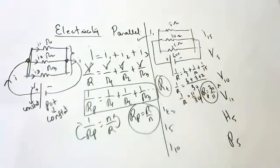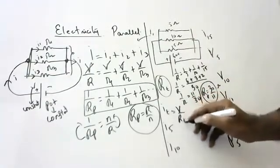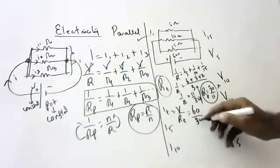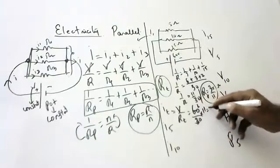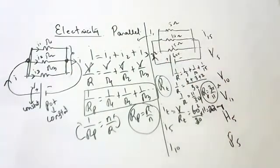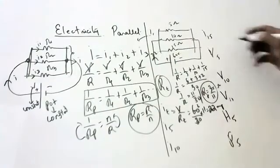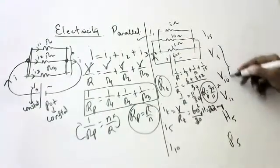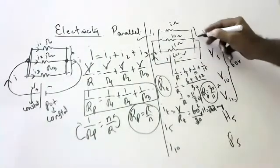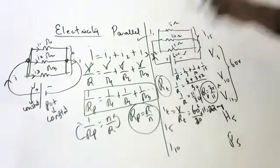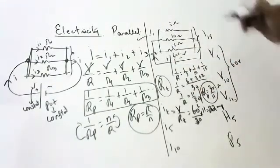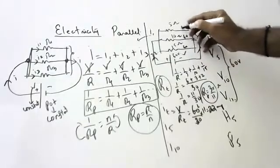Total current I = V/R. V is 60 volts and R is 30/11 ohms, so I = 60 × 11/30 = 22 amperes. In parallel, the potential across each resistor is the same — V5 = V10 = V15 = 60 volts.